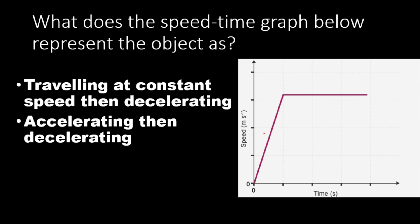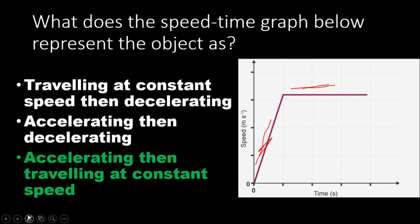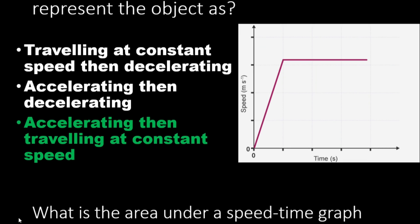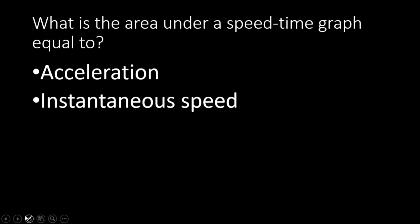Next question: what does the speed-time graph below represent the object as? Looking at this graph, this part is the acceleration part — the object is accelerating — and then the object is moving with constant speed. So the answer is: accelerating, then traveling at constant speed.